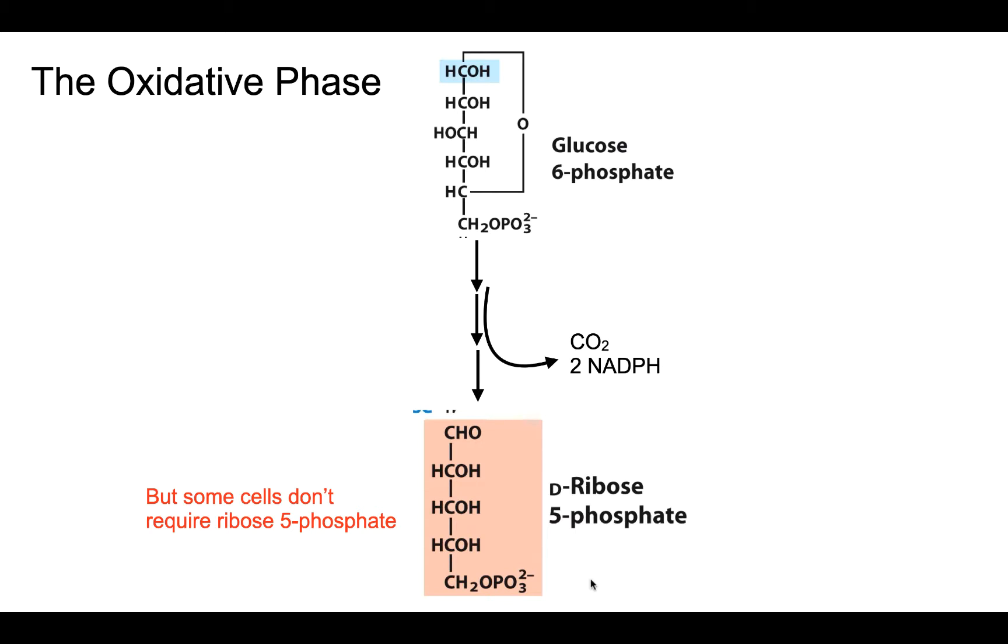They're not building nucleic acids, for example. So the non-oxidative phase of the pentose phosphate pathway is a way to recycle this ribose 5-phosphate back into glucose 6-phosphate. But how do you go about taking a 5-carbon molecule and